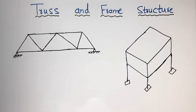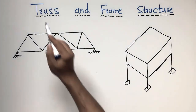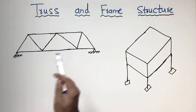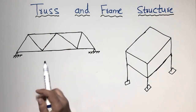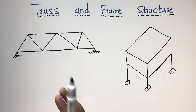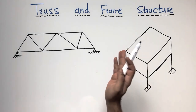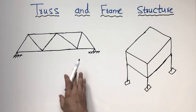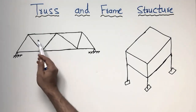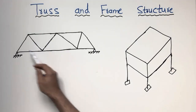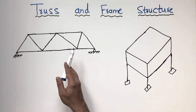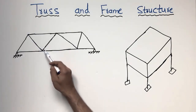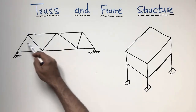The truss structure is a type of structure which is only subjected to axial stresses. It means that you have only tension or compression forces in your truss members. The truss structure always looks like this shape, in which these are called the truss members.